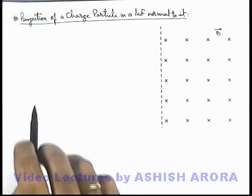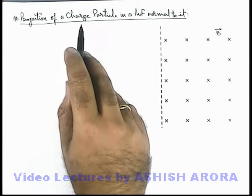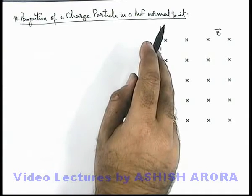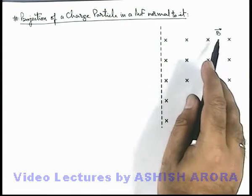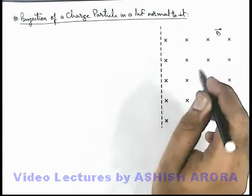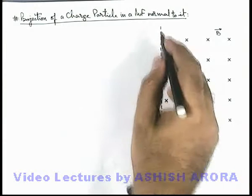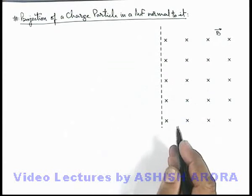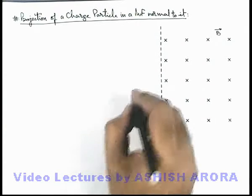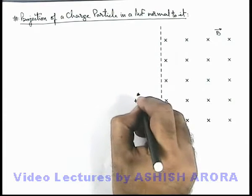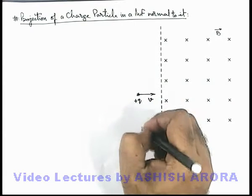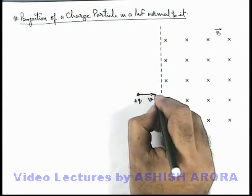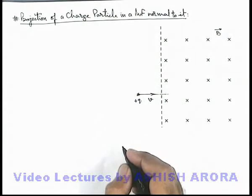Let us discuss the case of projection of a charged particle in a magnetic field normal to it. Here you can see in this region a magnetic field of magnitude B exists in the inward direction, and this dotted line represents the boundary of this magnetic field. A charged particle with charge magnitude q — a positive charge — enters into it with a velocity v in a direction perpendicular to the magnetic field.